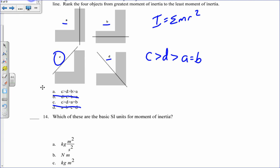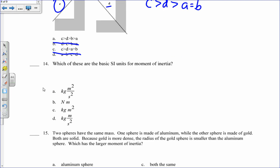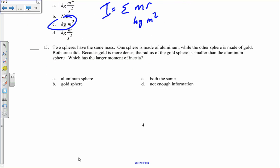Which of these are basic units for moment of inertia? Well, it's mr squared. So it's kilogram meter squared. I is the sum of mr squared. Two spheres have the same mass. One's aluminum, so it's big, because it's less dense than the gold sphere, which is small. So this one has a bigger r, yet the same mass. So it has a bigger moment of inertia for a.